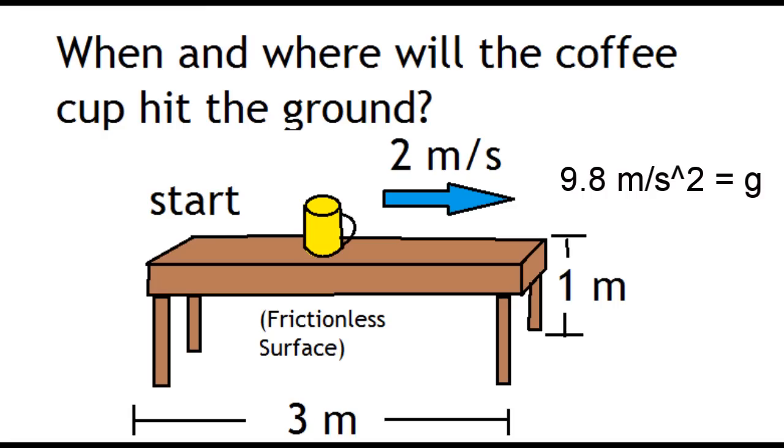Alright, in this problem we're going to be looking at a coffee cup that's traveling over a frictionless table at 2 meters a second. It's 3 meters from the edge, and the table is 1 meter high. The question is asking, when and where will the coffee cup hit the ground? So we're looking for the distance, and we're looking for the time.